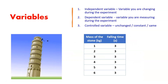When you plan an experiment, you need to decide what variables to use. There are three types of variables: independent variable, dependent variable, and controlled variable.